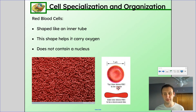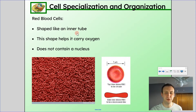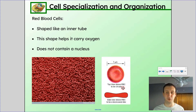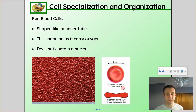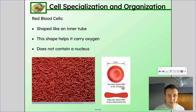Red blood cells are specialized for their purpose. They have a neat shape called a biconcave shape — kind of like an inner tube but with the center filled in. This shape helps carry oxygen and also helps them not get stuck as they travel through the tiny capillaries throughout your body. Red blood cells don't have a nucleus, which is really abnormal for a cell, but that allows them to carry more oxygen by packing more hemoglobin in. Hemoglobin is the protein that binds to oxygen and allows red blood cells to carry oxygen throughout our body.